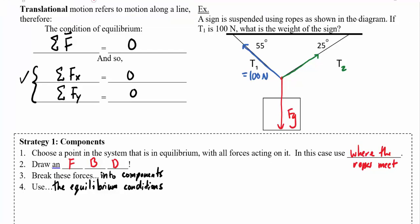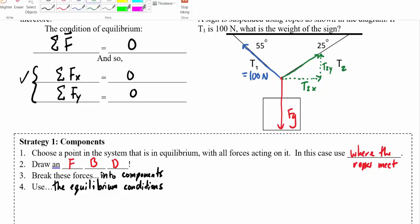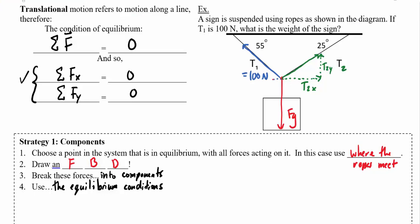If I break T2 into x and y components, I can see there's a force to the side. I go in the x direction and then turn directly upwards in the y direction. I label these components T2x and T2y. I can do the same with T1, finding a T1x component and a T1y component.